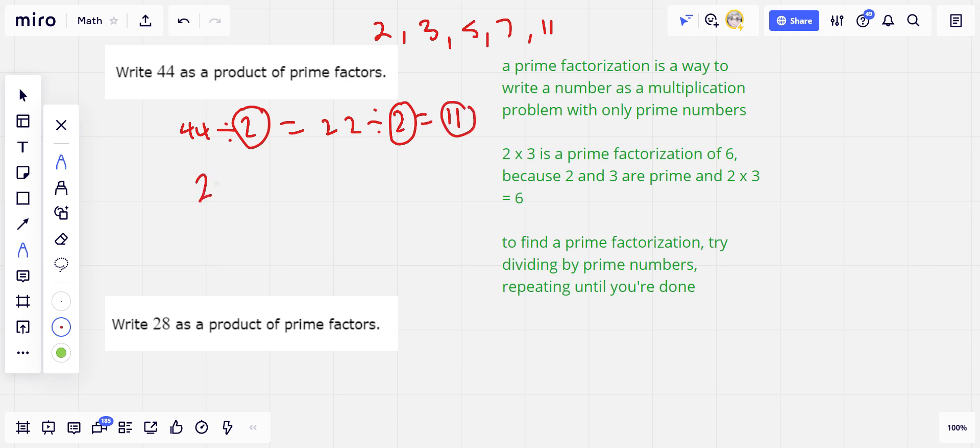So 2 times 2 times 11 is the prime factorization of 44, and I can double-check that by multiplying those together again. 2 times 2 is 4, times 11 would be 44. Yeah, that checks out. So this is the prime factorization of 44.